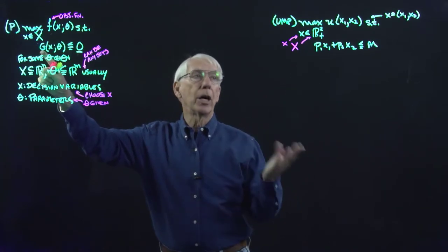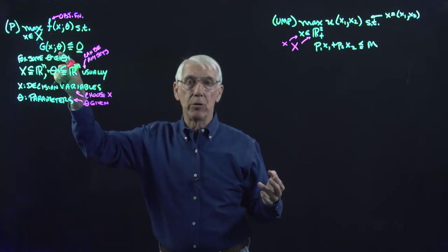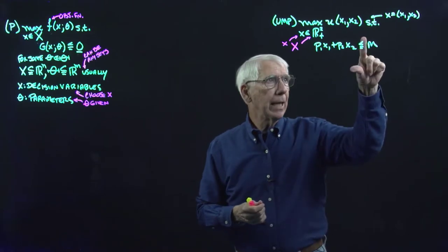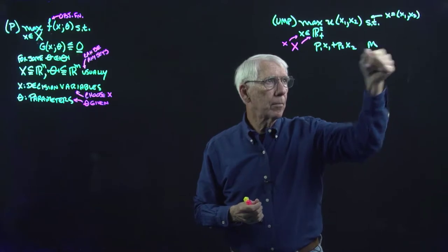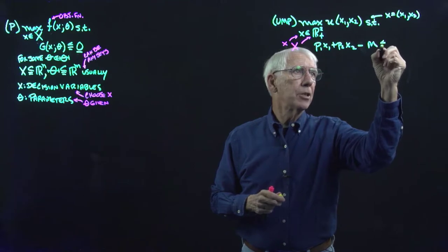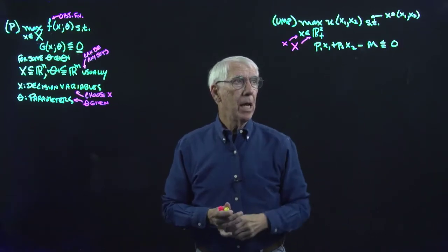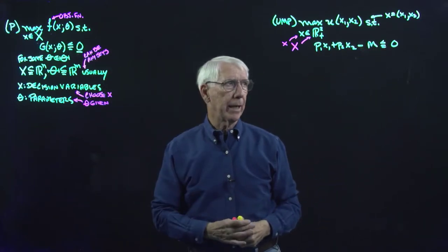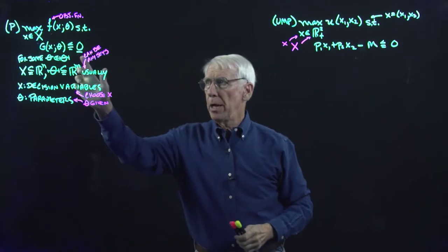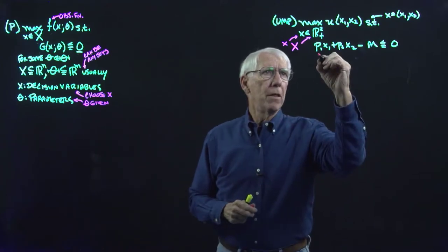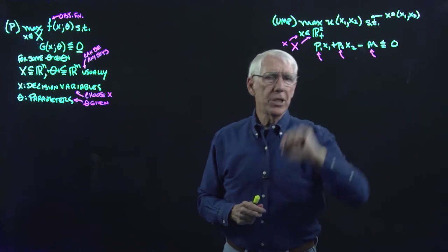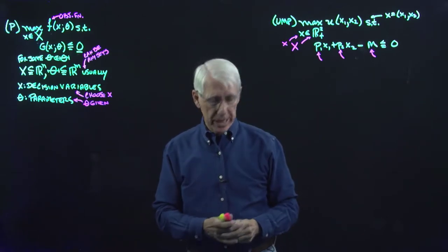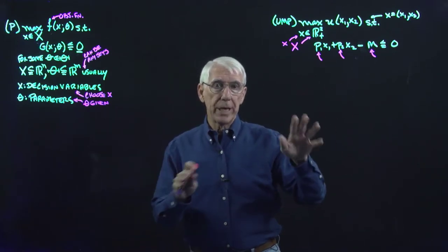I can simply rewrite the budget constraint as p1*x1 + p2*x2 minus M less than or equal to zero. Now we have exactly the same constraint, with all variables and parameters on the left-hand side and zero on the right, just as in the general problem. And since there's only one constraint, that's just the number zero, not the zero vector.